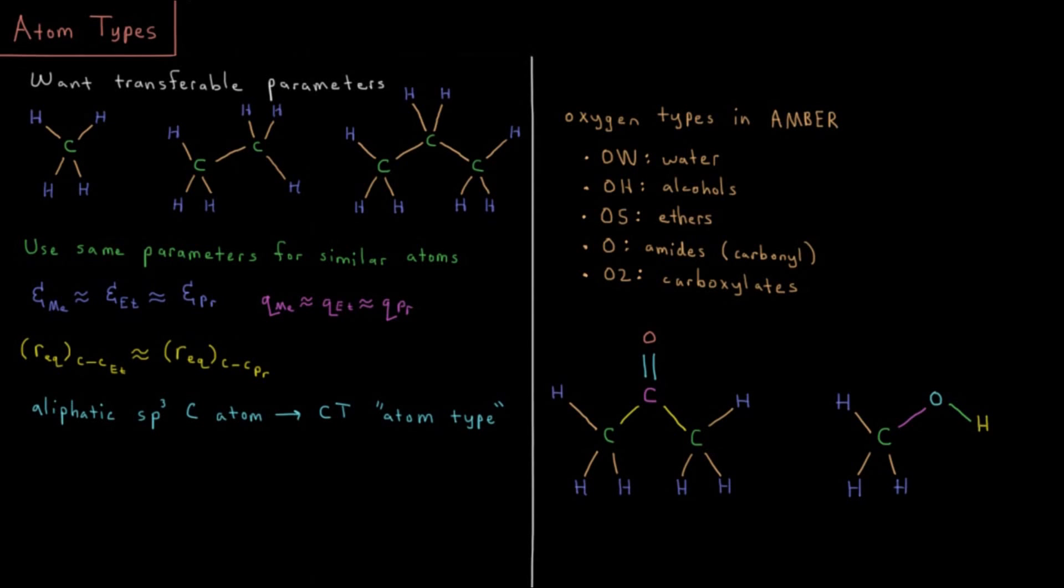This video will discuss atom types in molecular mechanics. In our previous video on parameters we discussed that one desirable property of parameters would be to have them be transferable. In general, what transferable means is that similar chemical systems have parameters which we can use from related molecules.